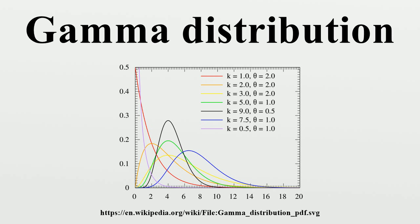The gamma distribution is the conjugate prior for the precision of the normal distribution with known mean. The Wishart distribution is a multivariate generalization of the gamma distribution. The gamma distribution is a special case of the generalized gamma distribution, the generalized integer gamma distribution, and the generalized inverse Gaussian distribution. Among the discrete distributions, the negative binomial distribution is sometimes considered the discrete analog of the gamma distribution.